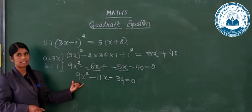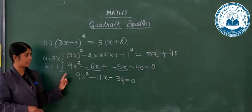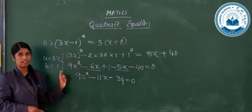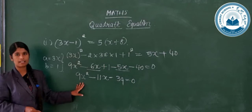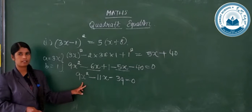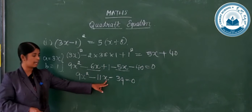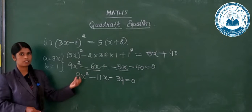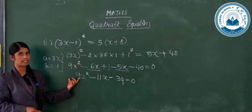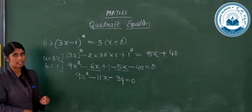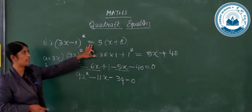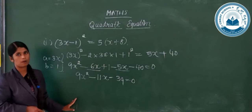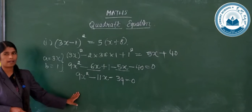Now we check whether this is a quadratic equation. First, does it contain a single variable? Yes — only x appears. Then we check the highest power of the variable: here it is 1, and here it is 2, so the highest power is 2. Therefore this is a quadratic equation. So the given equation (3x − 1)² = 5x + 8 is a quadratic equation.